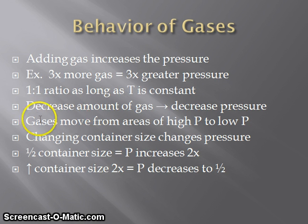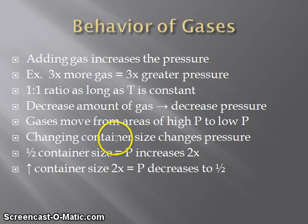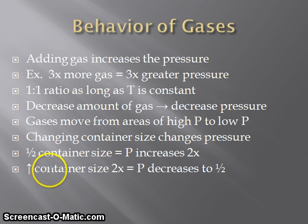Diffusion of gases means that they are moving from areas of high pressure to low pressure, or high concentration to low concentration. Changing the container size of a gas will also allow us to change the pressure. If we cut the size of the container in half, this would cause the pressure to be doubled. If we increase the container size by doubling it, we would drop the pressure to half of what it originally was.